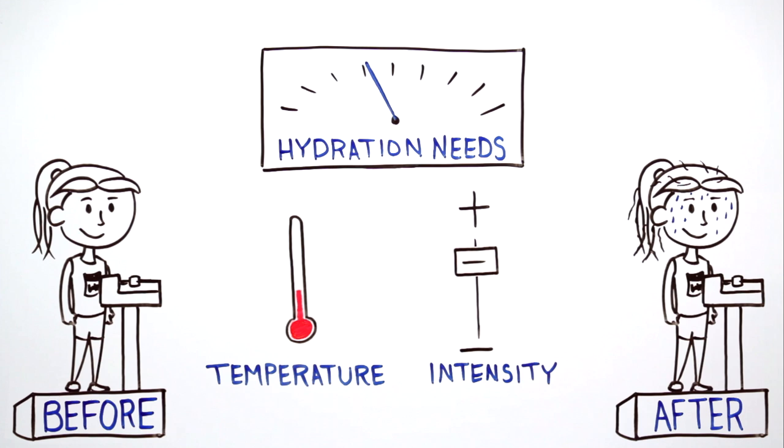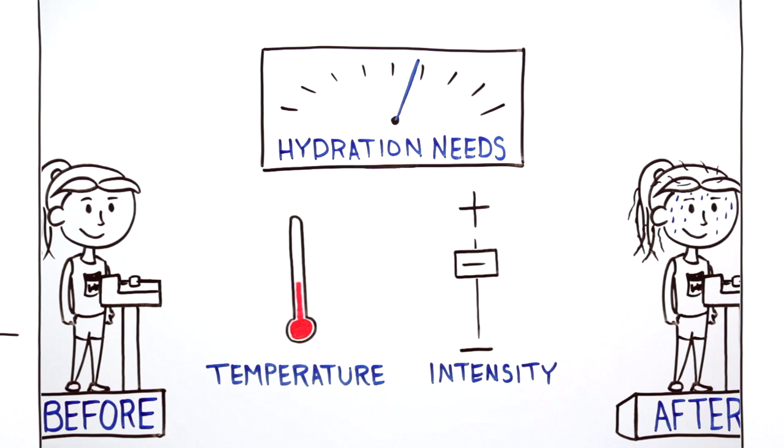Measuring fluid loss under different conditions, such as varying weather temperature or intensity levels, gives athletes a clearer picture of how much fluid they need to stay hydrated but avoid over-drinking.